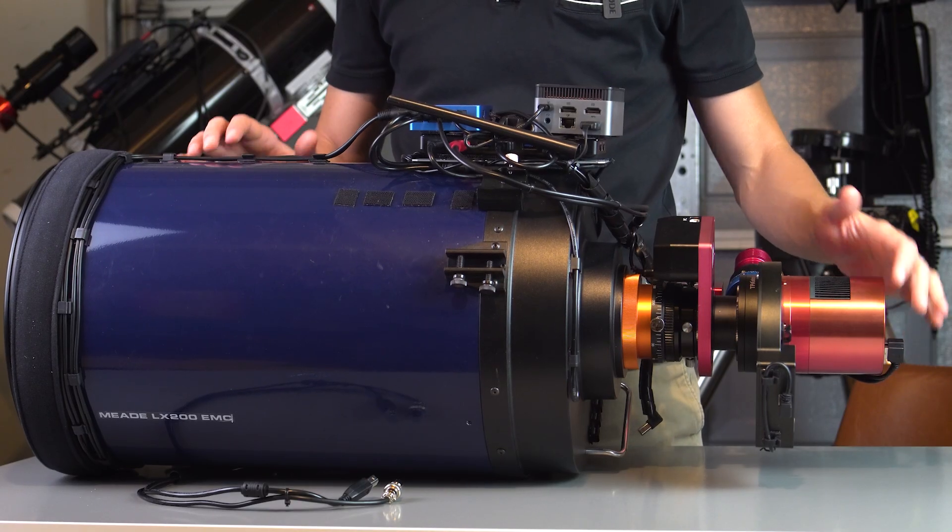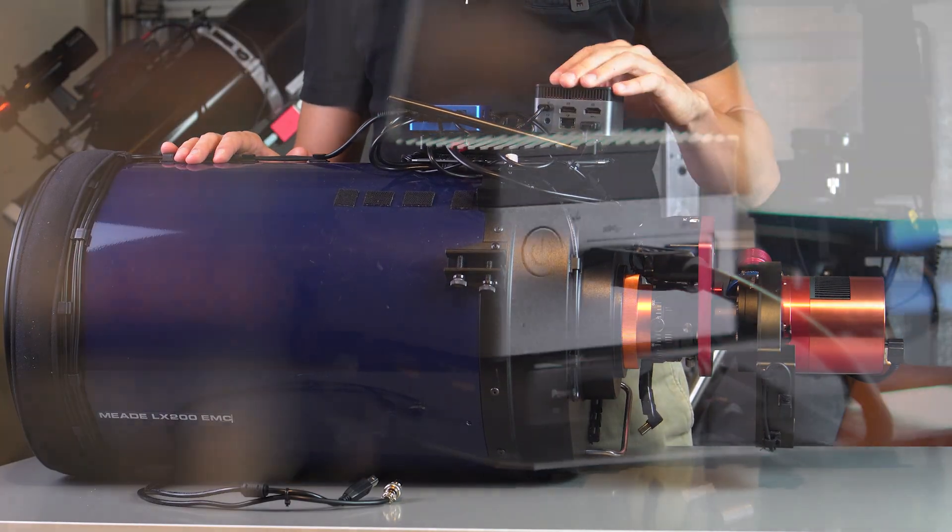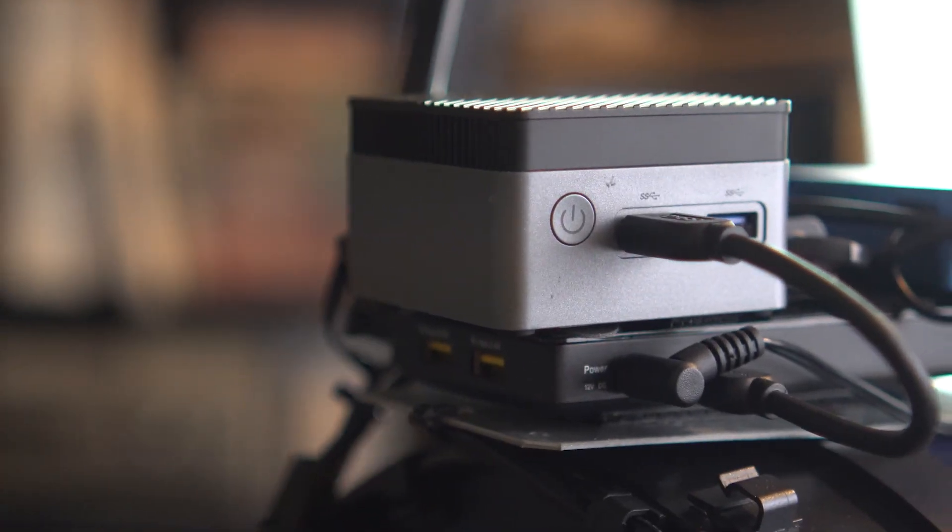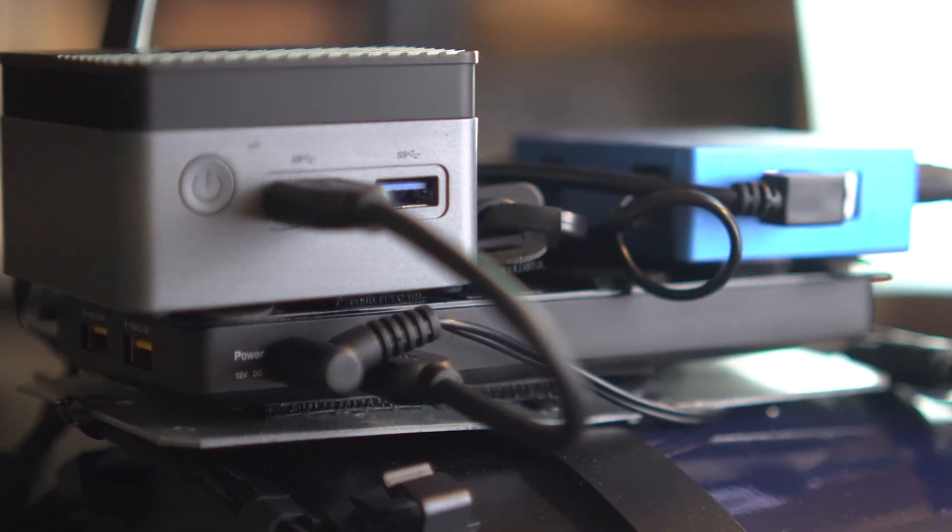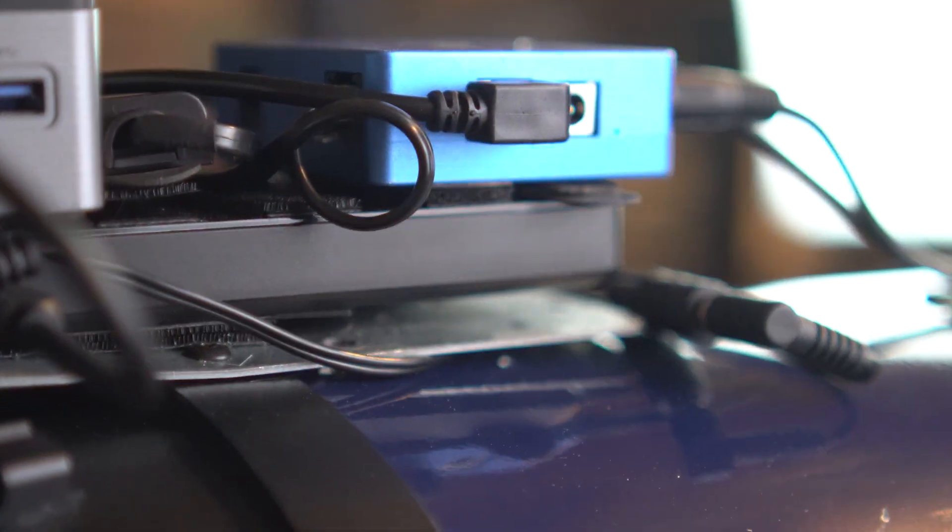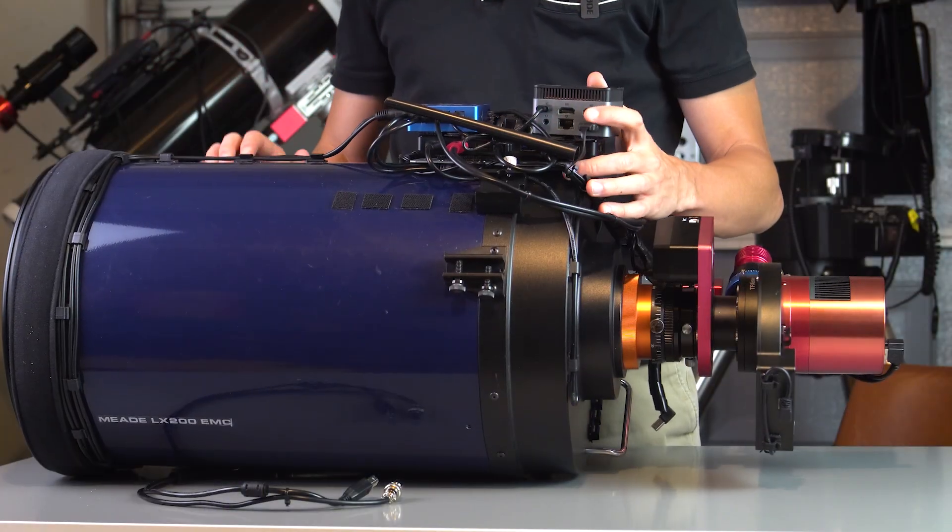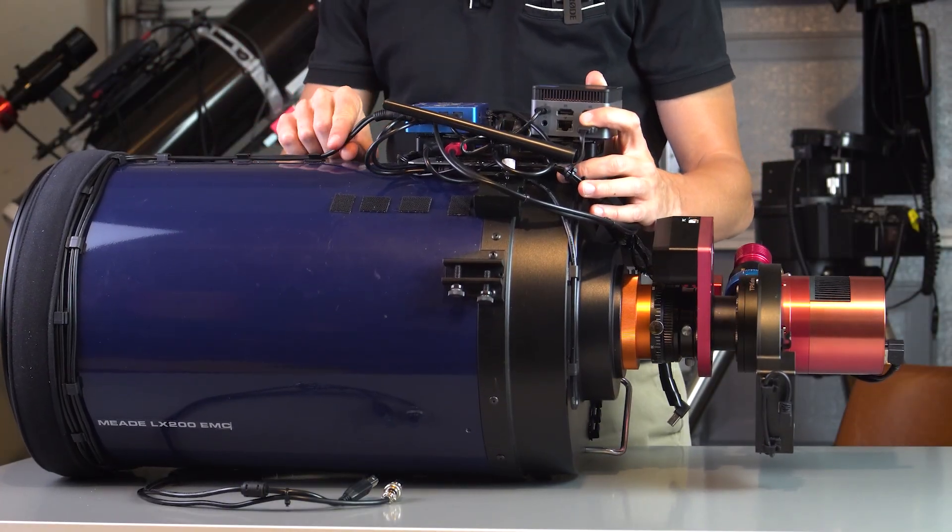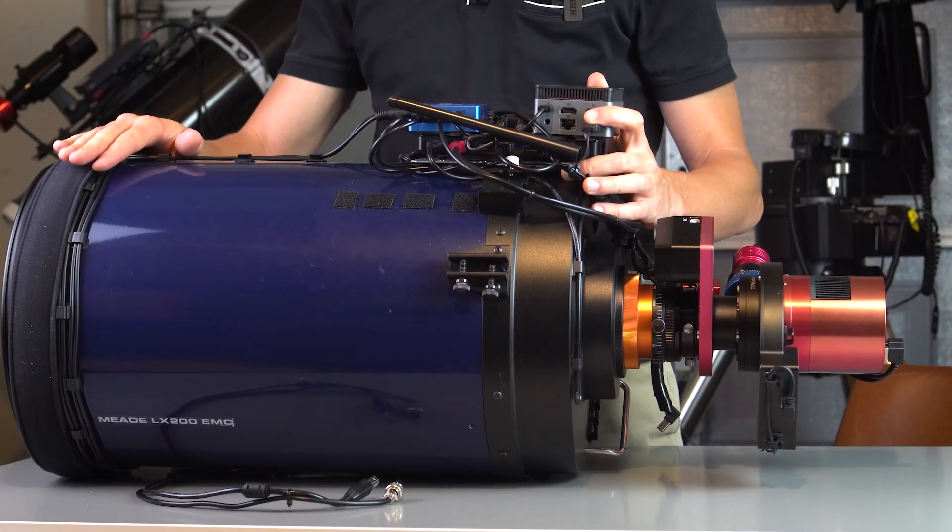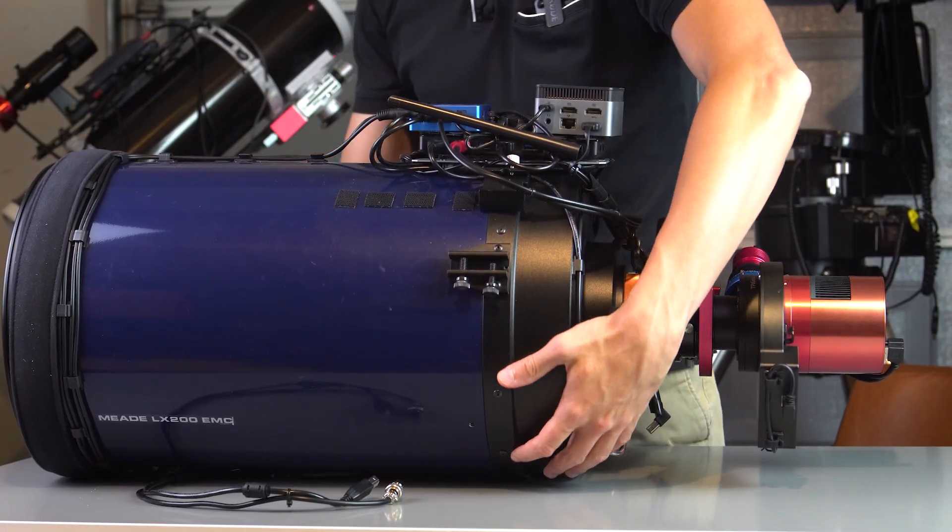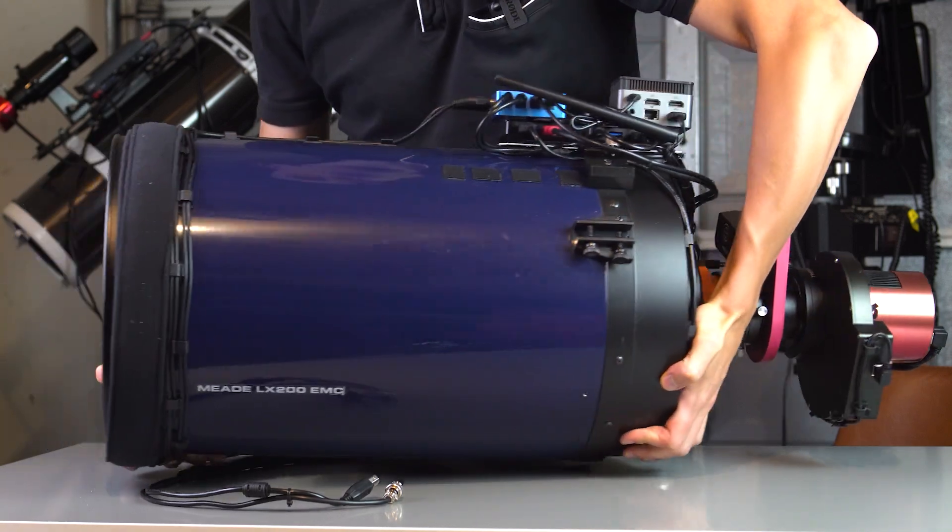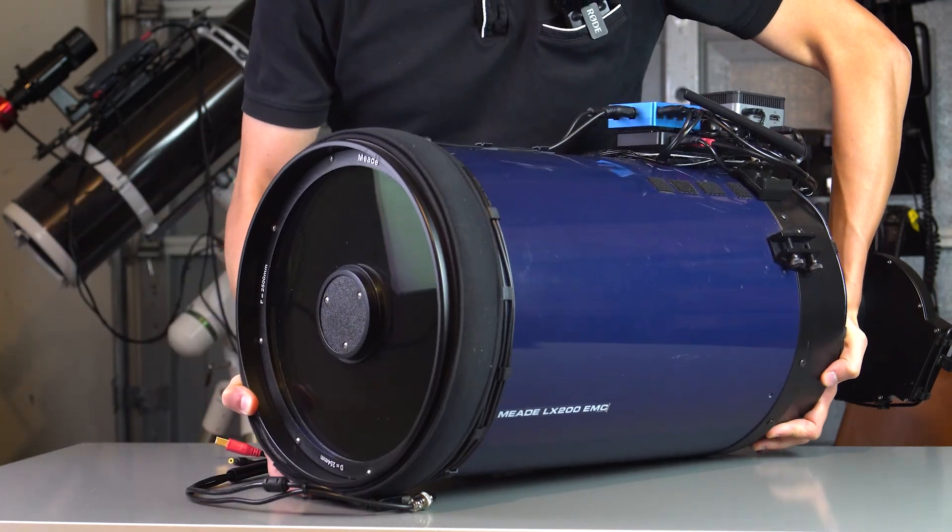So this is how the telescope looks like. I control it using this mini PC on Windows using NINA. Here I also got the Pegasus Astro Pocket Power Box that I use as a power distribution to basically power everything. Also from the power box I got two dew heaters running that go directly to the corrector plate on the telescope. I think I can show it to you.